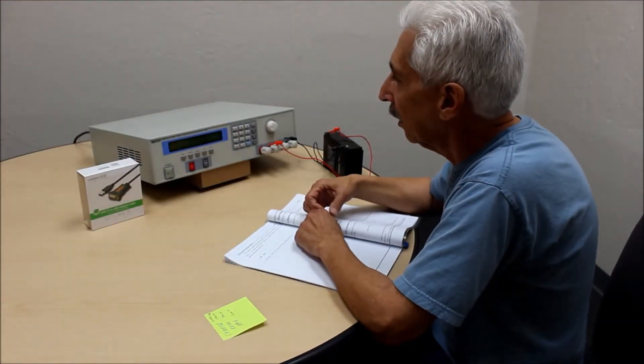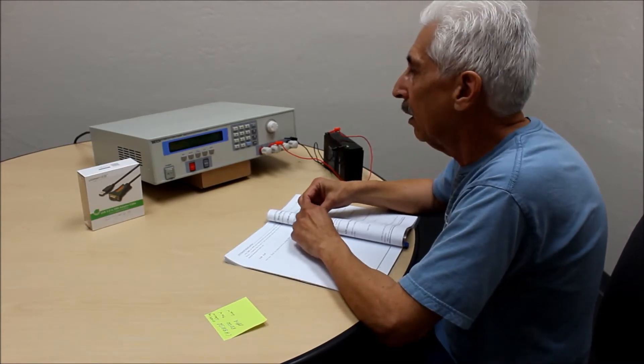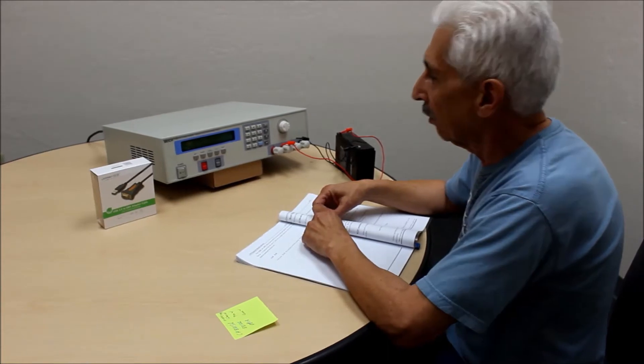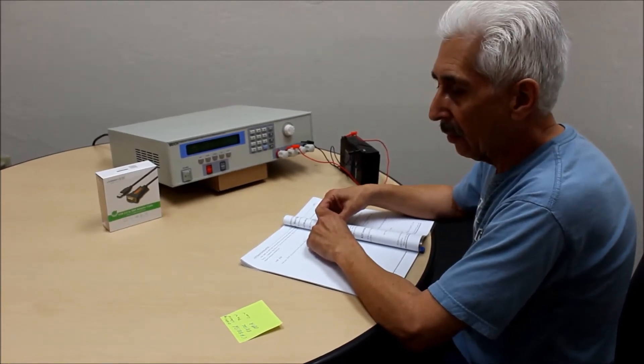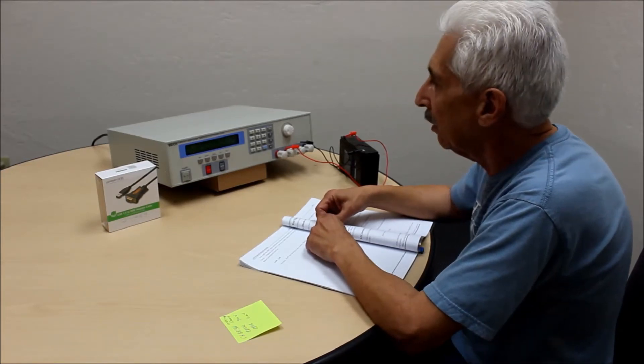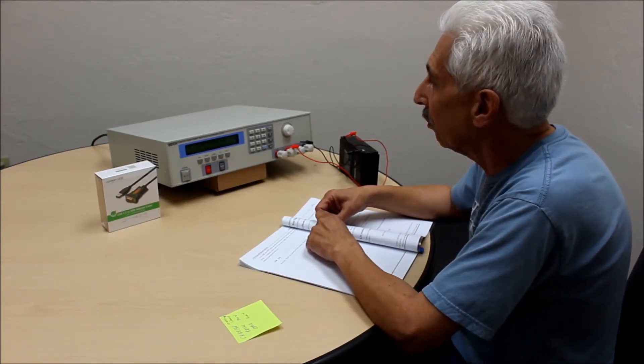Today we're going to be taking a look at the new Beech DC electronic loads. We have three models available and these are all very high power electronic loads. This model we're looking at here is the 8813 which is capable of 1200 watts, 0 to 360 volts and up to 60 amps.